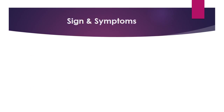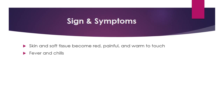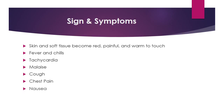Signs and symptoms of a patient suffering from VRSA include: skin and soft tissue becoming red, painful, and warm to the touch; fever and chills; tachycardia or high heart rate; malaise; cough; chest pain; nausea; vomiting; and shortness of breath.